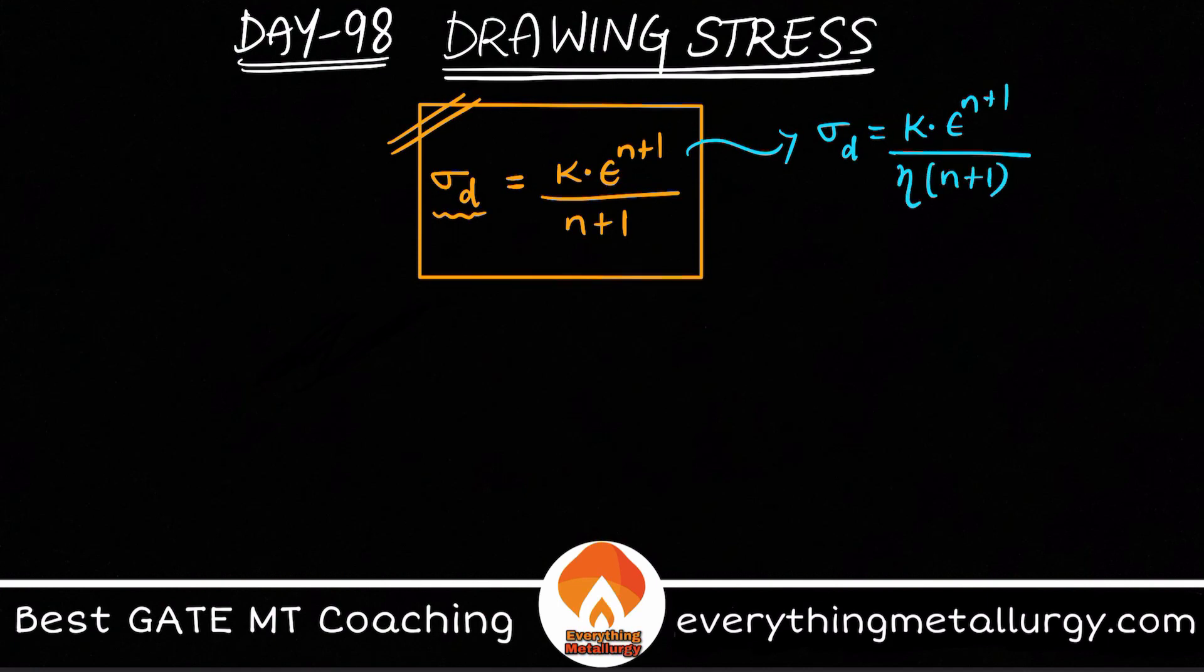So here K and n are the same things which we see in our flow stress or the power law hardening relationship. If you carefully see what is the flow stress that we have, sigma will be equal to K into epsilon power n. We call this a Holloman stress-strain relation or the flow curve relationship for true stress and true strain.